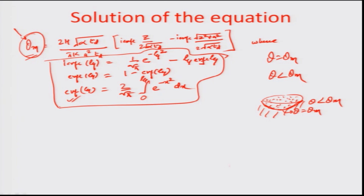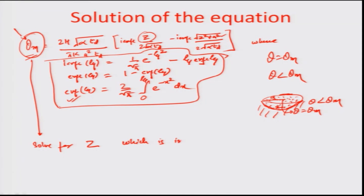This is essentially the solution of the boundary corresponding to theta equal to theta_m, and it depends on two factors: A, the radius of the assumed circular heat source, and Z, which gives the maximum depth to which the melting boundary extends.